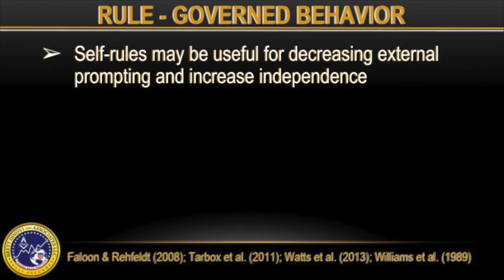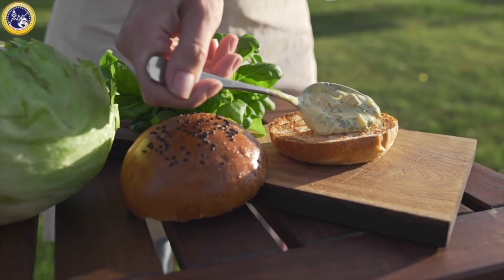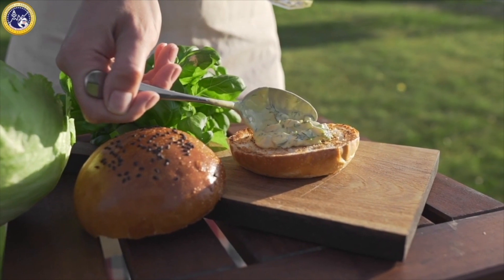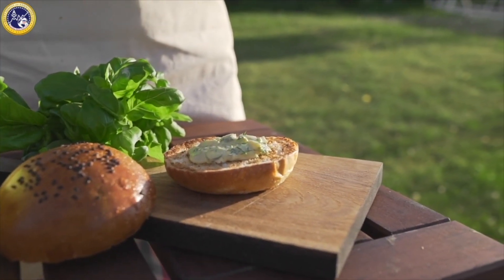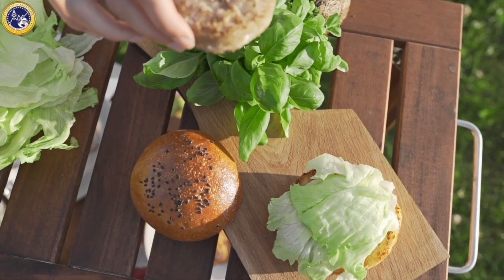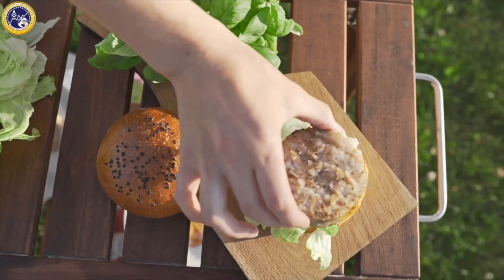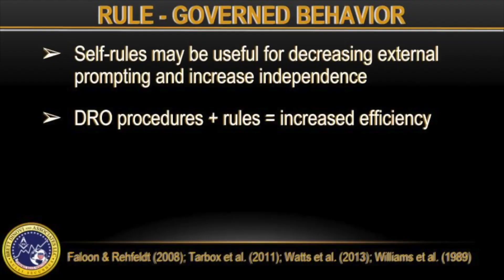Learning to generate and follow self-rules can be a potentially useful self-management strategy for individuals that rely on external instructions or prompts, as stated by Falloon and Rayfield. For example, an individual who learned to put together a meal might be taught the chain task of assembling that meal by stating the self-rule prior to each step in the chain task. This allows less reliance on prompts and, more importantly, increased overall independence. Rules can also enhance the speed and efficiency of DRO procedures and other contingency-based procedures, as stated in Watts 2013 and Williams & Colleagues 1989.